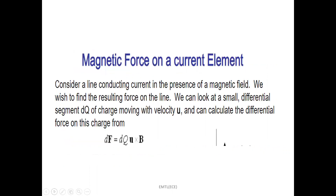Next concept: magnetic force on a current element. First of all, what is the meaning of a current element? A current element means it is a current-carrying line conductor — that is, a line conducting current, through which a current I is passed. Now, it is placed in a magnetic field. Then, what is the resultant force on the line?